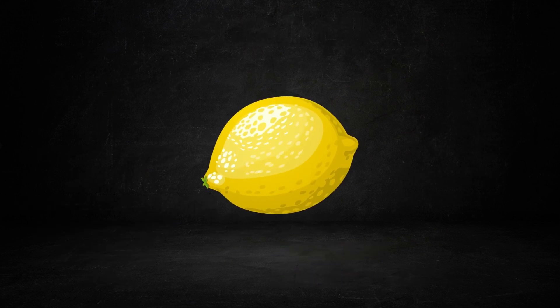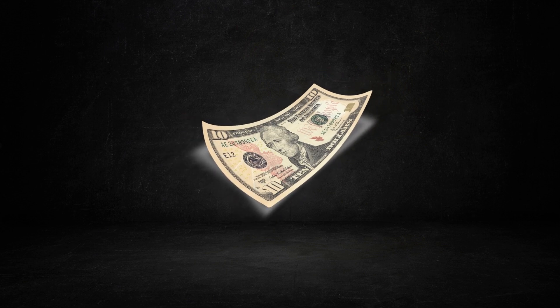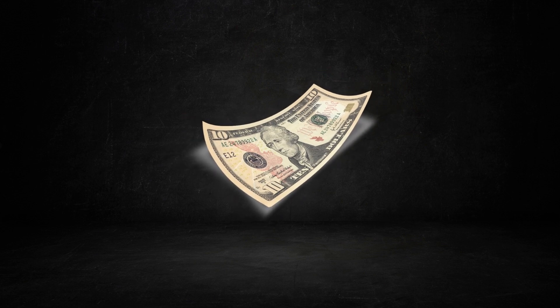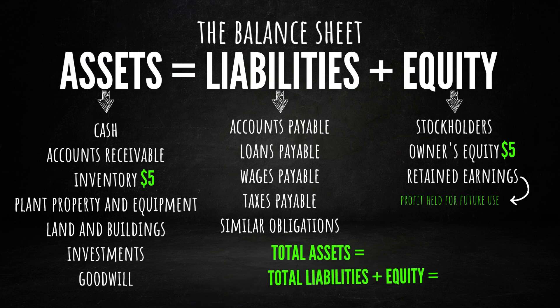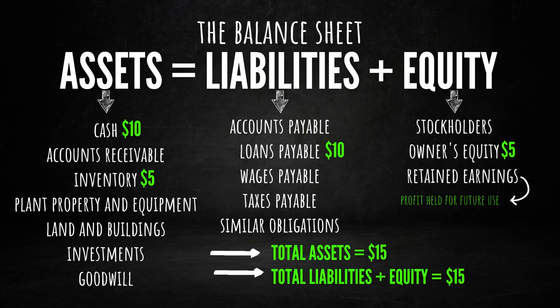Next, I need to extract juice from the lemons, but I don't have enough funds to purchase a lemon squeezer. So I approach a friend and borrow $10. As a result, the business's cash increases by $10, and the loans payable also increase by $10. Consequently, the total assets and the sum of liabilities plus equity both amount to $15, preserving the equation's balance.